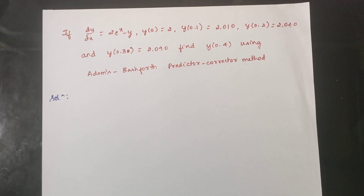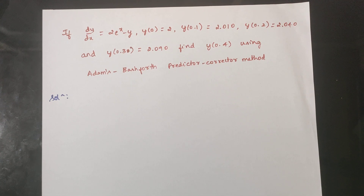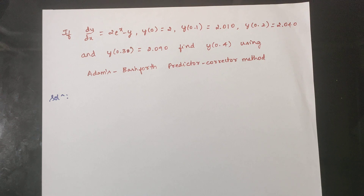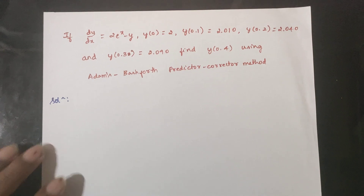Question: Adam's Predictor-Corrector method. If dy/dx equals 2e^x minus y, y(0) = 2, y(0.1) = 2.010, y(0.2) = 2.040, and y(0.3) = 2.090, find y(0.4) using Adam's Predictor-Corrector method.